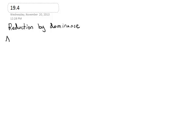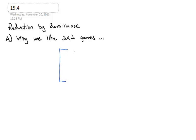Before we set this up, I want to make clear exactly why we like two-by-two games. The best way to illustrate that is to take a look at a game that's not two-by-two. Let's say we've got this three-by-three game where there are three choices for each player: negative 2, 0, and 3 for the first row; 1, negative 2, negative 1 for the second row; and 3, negative 1, 1 for the third row.